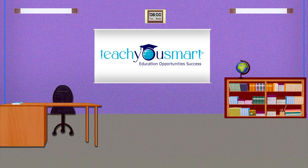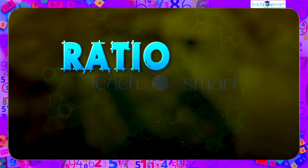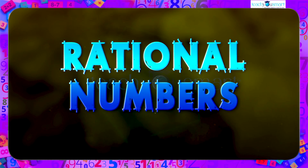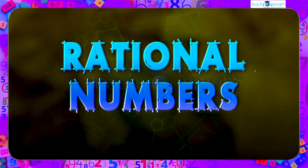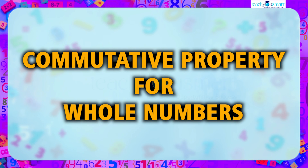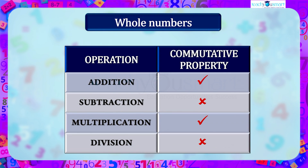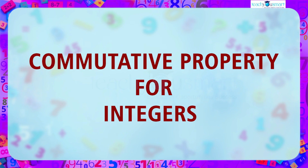Hello students, welcome to Teach You Smart. Let's continue our journey through rational numbers. In our previous section, we discussed the commutative property for whole numbers. Whole numbers are commutative for addition and multiplication, but not commutative for subtraction and division. Today we are going to discuss the commutative property for integers.